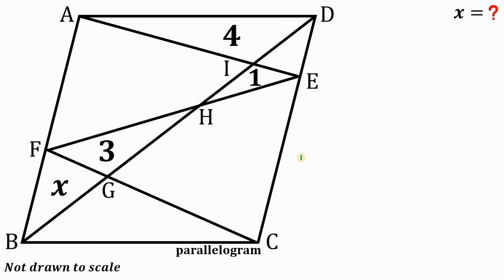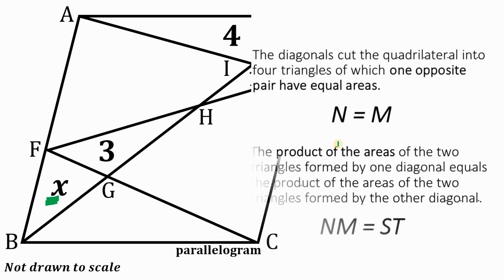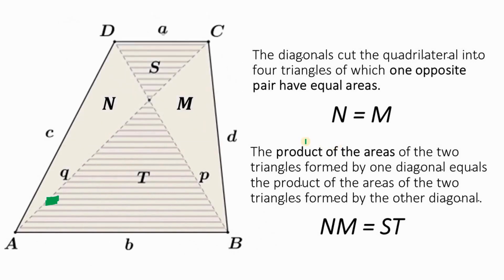Alright, so given this figure — again, this figure is not going to scale — the goal is to find the area of this region represented as X. To answer this kind of question, we're going to use two different concepts. The first is the concept about trapezoids: the diagonal cuts a quadrilateral into four triangles, where one opposite pair has equal areas.